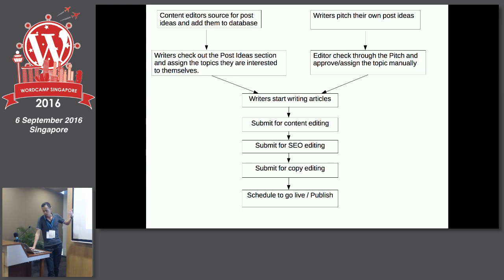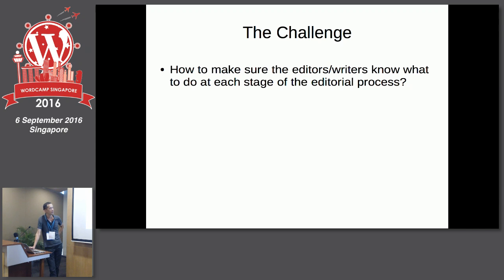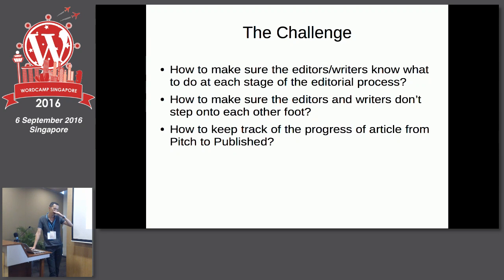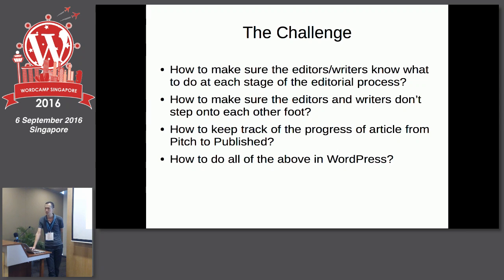The challenge for us is how to make sure editors and writers know what to do at each stage of the editorial process. How do we make sure they don't step on each other's toes? We don't want the editor to edit the article while the writer is still writing. We don't want the writer to publish without editing. And how do we keep track of the article's progress — whether the topic is approved, whether writing is done, whether it's ready for review or ready to go live? And we need to do everything in WordPress.